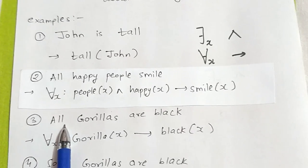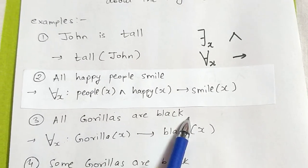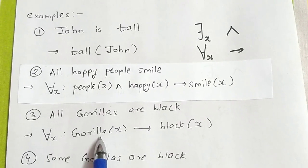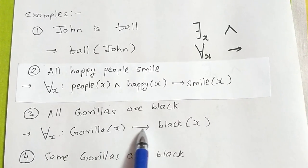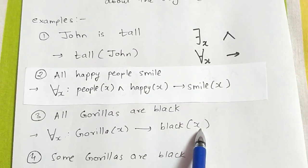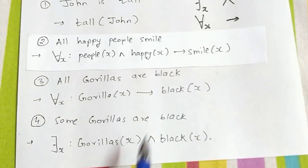Our next example is all gorillas are black. Since we have 'all', for all X, gorilla(X), and it implies that they are black, black(X). This was pretty easy.